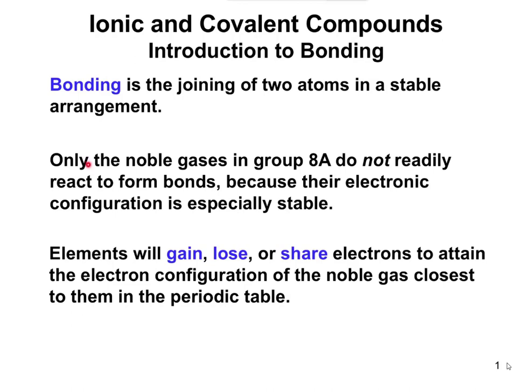One thing to point out: only the noble gases in group 8A don't readily react to form bonds. Those noble gases — the ones on the far right side of the periodic table, helium, argon, neon, and ones like that — are not going to form bonds. They're very stable as they are. Everything else on the periodic table, though, is able to form bonds, and we'll look at how that happens in this chapter.